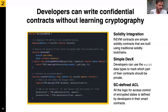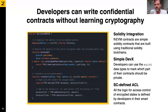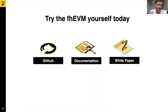Putting everything together, we have an encrypted ERC20. The developer experience is very close to working with plain text data — you just use the new data types and extra operations. For example, the balanceOf function uses re-encryption with a signature matching the sender's identity. The transfer function keeps everything encrypted but leaks one bit indicating whether there was sufficient balance. We have GitHub repositories, documentation, Docker images, and a white paper with full details available for you to try.